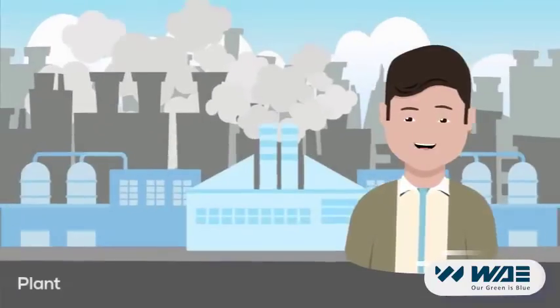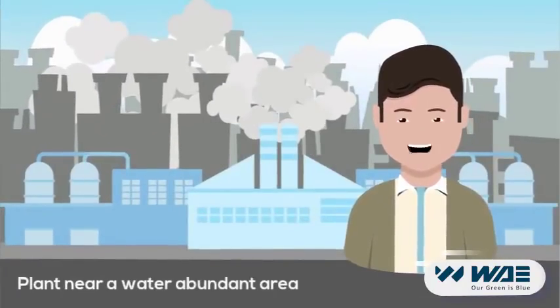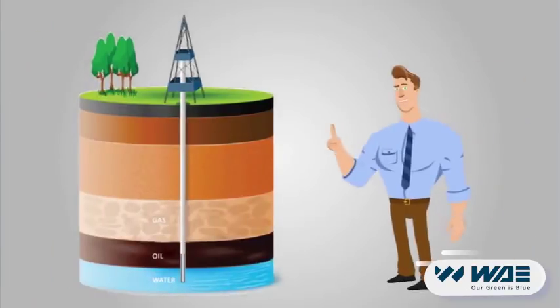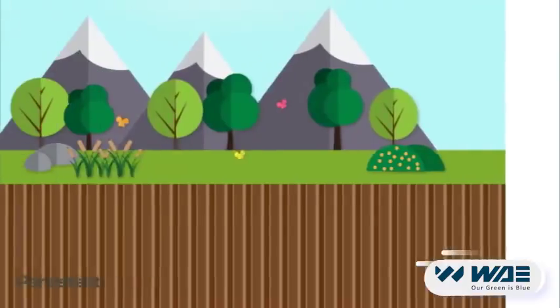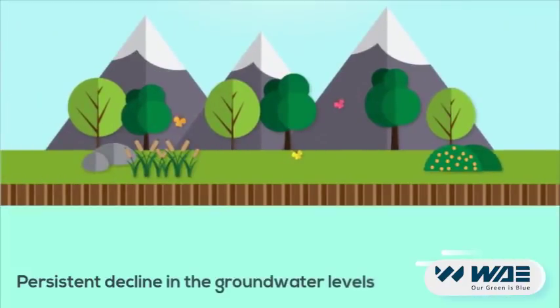To set up a big plant near a water-abundant area, bottled water companies need to extract groundwater from a source at a rate more than the replenishment rate, leading to a persistent decline in the groundwater levels.